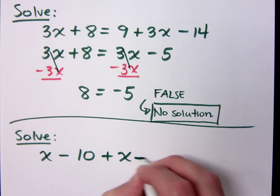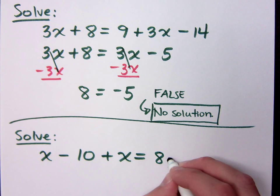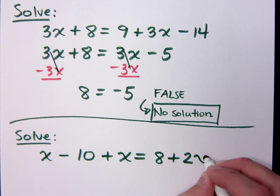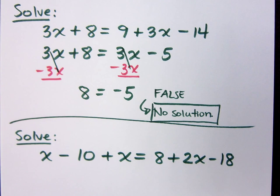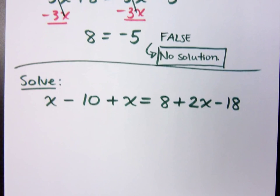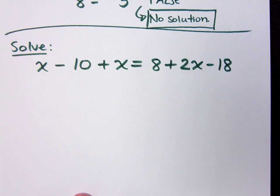It's a time saver, really. It's like, okay, when's your kid's birthday? Oh, I got this one. How about this equation? x minus 10 plus x equals 8 plus 2x minus 18.